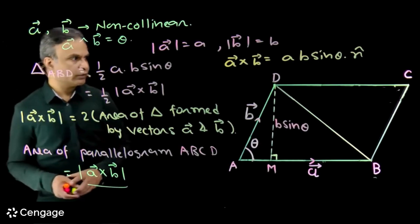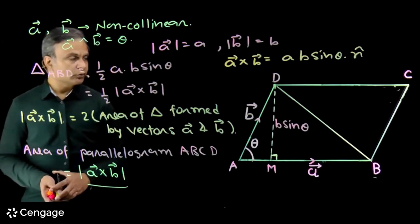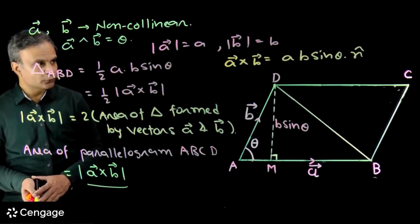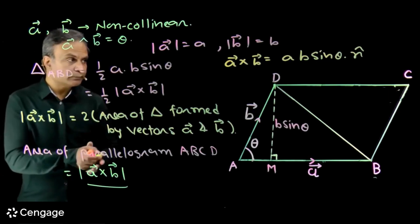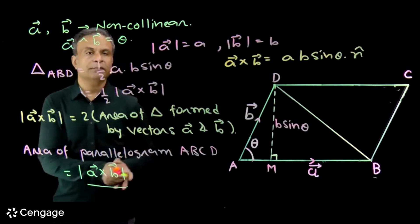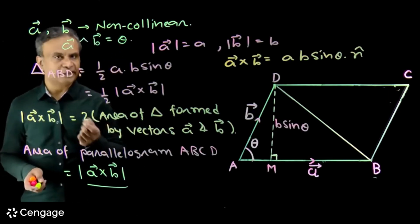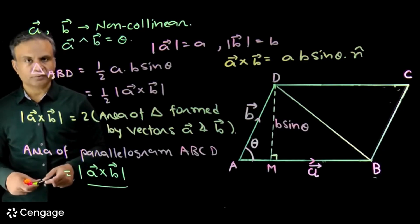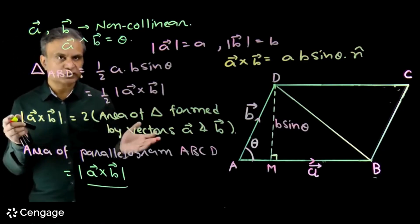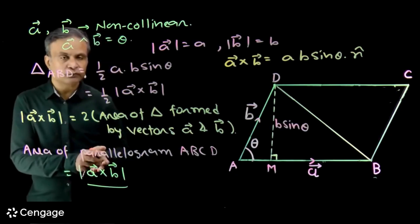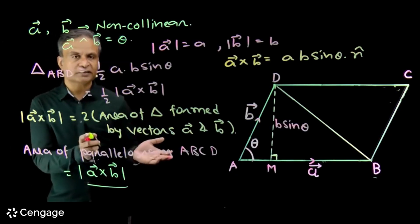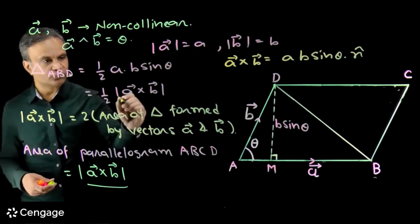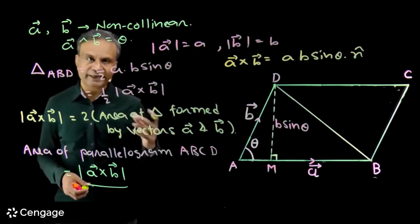This is the geometrical interpretation: the modulus of A cross B gives the area of the parallelogram formed by vectors A and B. If two non-collinear vectors are given, then we can certainly form a triangle, and the area of that triangle will be half of the modulus of A cross B.